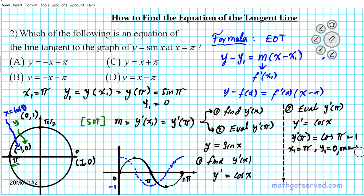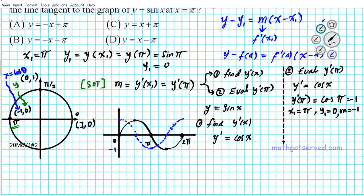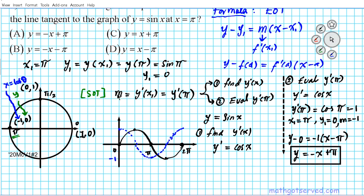What we're going to do right now is put everything together in the formula, Y minus Y1 equals M times X minus X1, and then we're going to proceed to put it in slope-intercept form. So we have Y minus zero equals negative one times X minus pi. Let's put this in slope-intercept form: Y equals negative X plus pi is your final answer. The answer to question number two is option letter A.